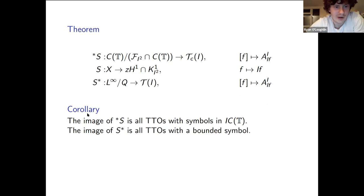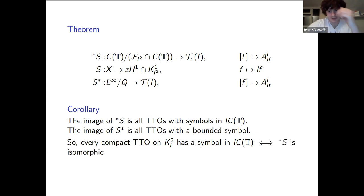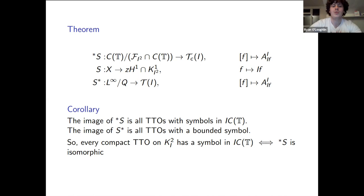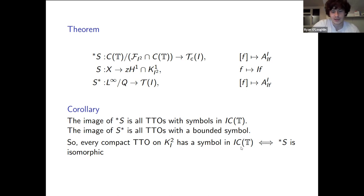From this theorem, one immediately deduces that the image of the pre-adjoint star-S is all TTOs with symbols in I·C(T), and the image of S-star is all TTOs with a bounded symbol. A powerful observation follows: every compact TTO on the model space having a symbol in I·C(T) is equivalent to the map star-S being an isomorphism, since star-S is always bounded and injective, so it is an isomorphism exactly when it is surjective.